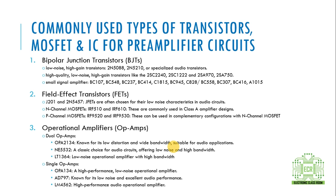2SC224, 2SC1222, 2SA9700, 2SA750. These are low noise, high quality, high gain BJT transistors. These are small signal amplifiers — the common BC107, BC548, BC237, BC141, BC1815, BC945, BC828, BC558, BC345.